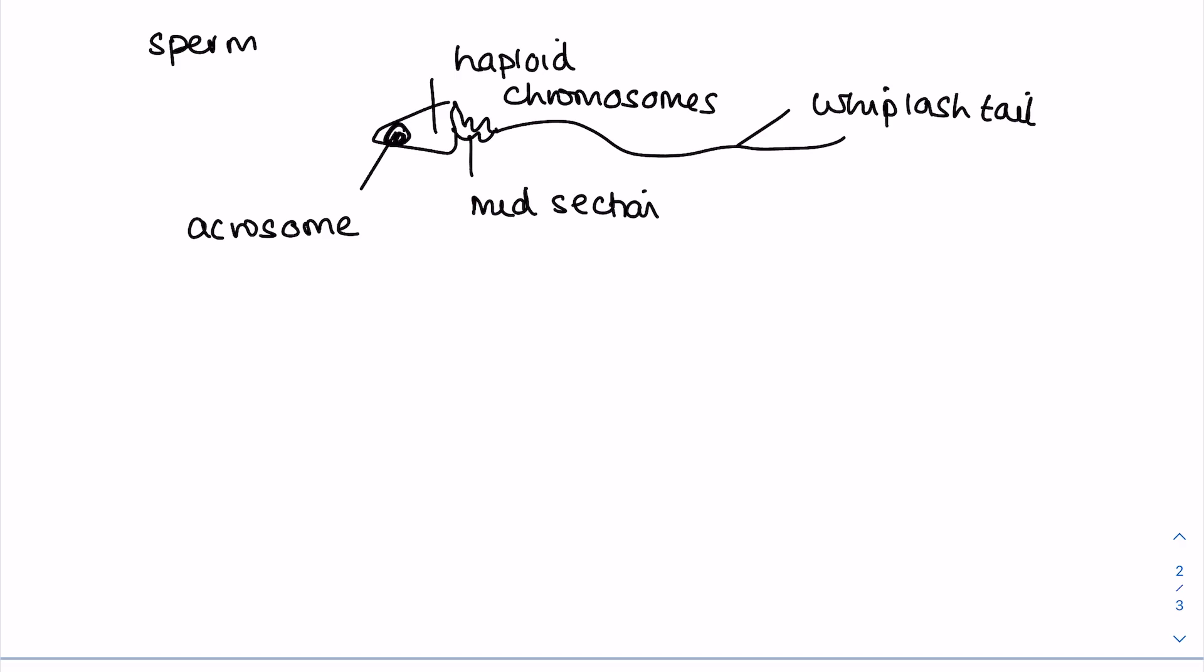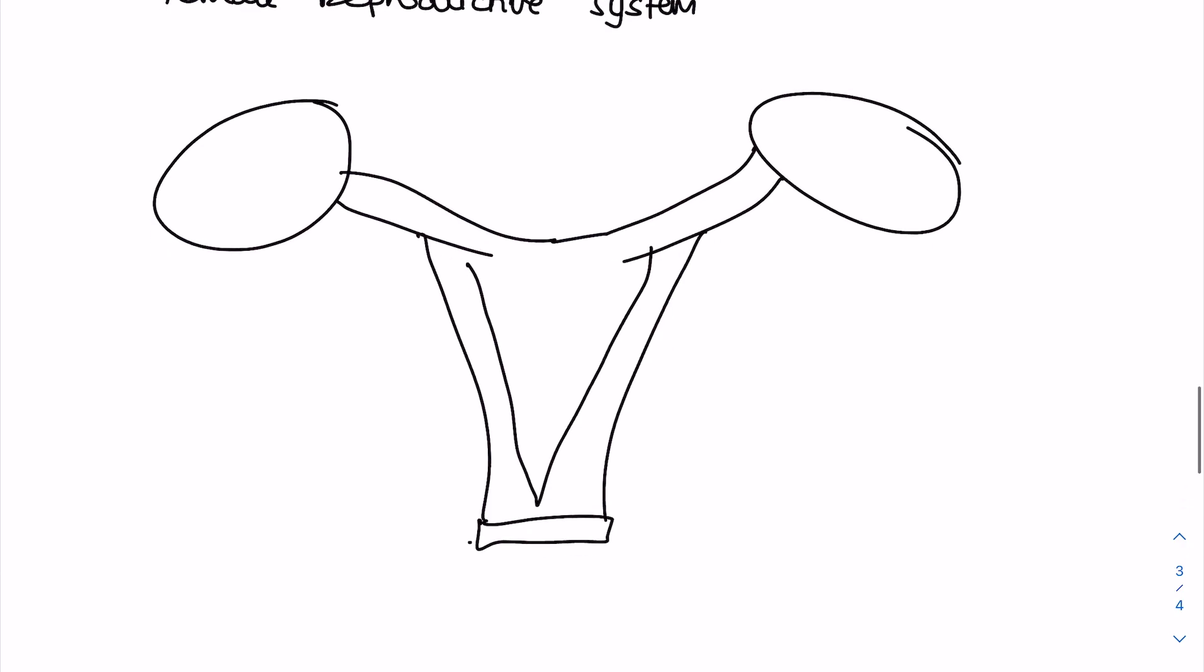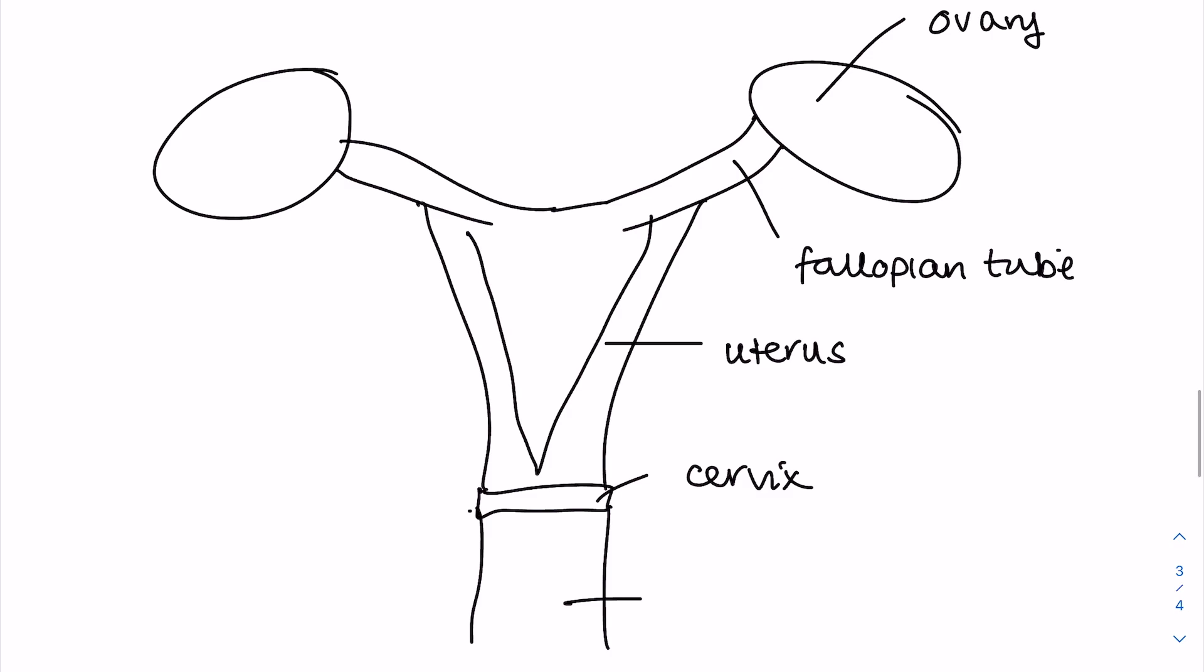Right, the female reproductive system. So there are two ovaries, then you have the fallopian tubes or oviducts feeding into the uterus. This is supposed to resemble the cervix and then lastly the vagina. So the ovary is where the eggs are made and estrogen is made. The fallopian tube or oviduct is where fertilization takes place. The uterus is where that embryo grows. The cervix creates a boundary between the uterus and the vagina, and then vagina is where copulation takes place.